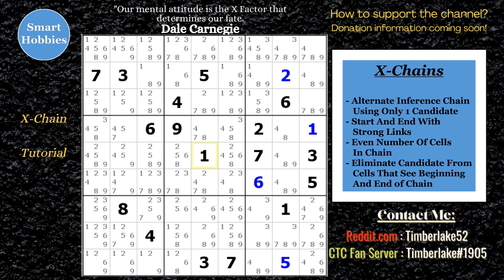For our next example, we're going to look at an X-Chain that's a little more complicated than just the two-string kite or turbot fish. This is from 'Fried Fish,' a collaboration video I did with Ashish Kumar on Shacklin Sudoku and Puzzles. This is the version I worked on. When I was looking at the threes, I discovered an X-Chain — let's see if you can spot it using the threes. We'll look right here at this starting square.